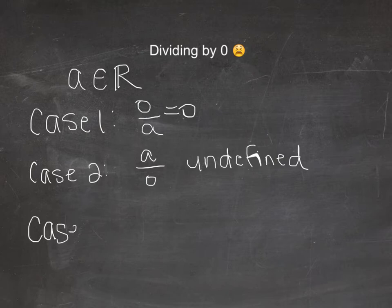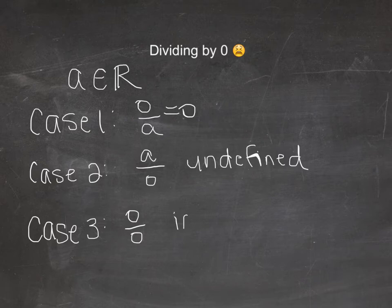And then the third case is if you have zero divided by zero. This is even different than case two. If I have zero things and I try to divide them into zero groups again, it doesn't make any sense, and it is called an indeterminate form.